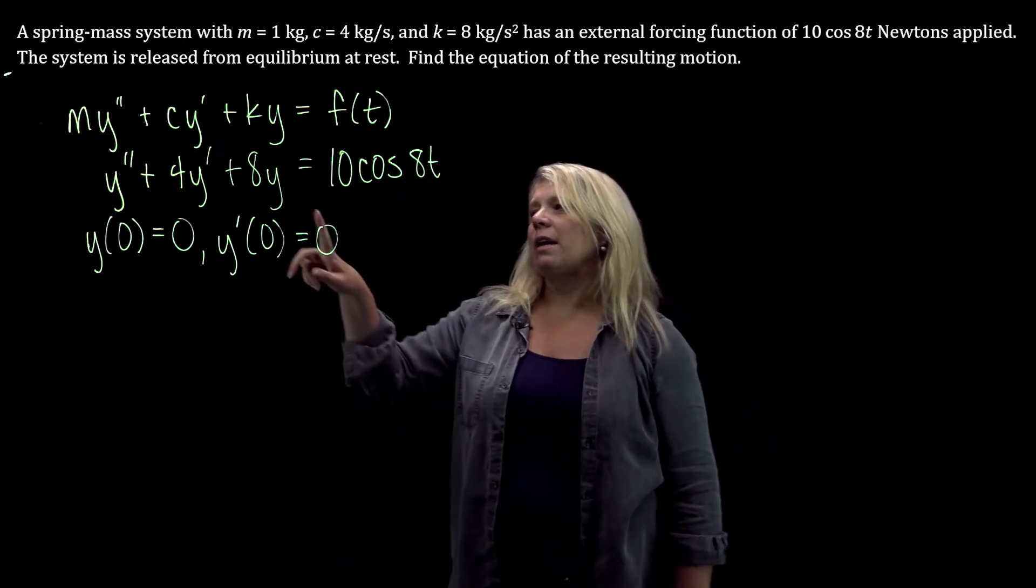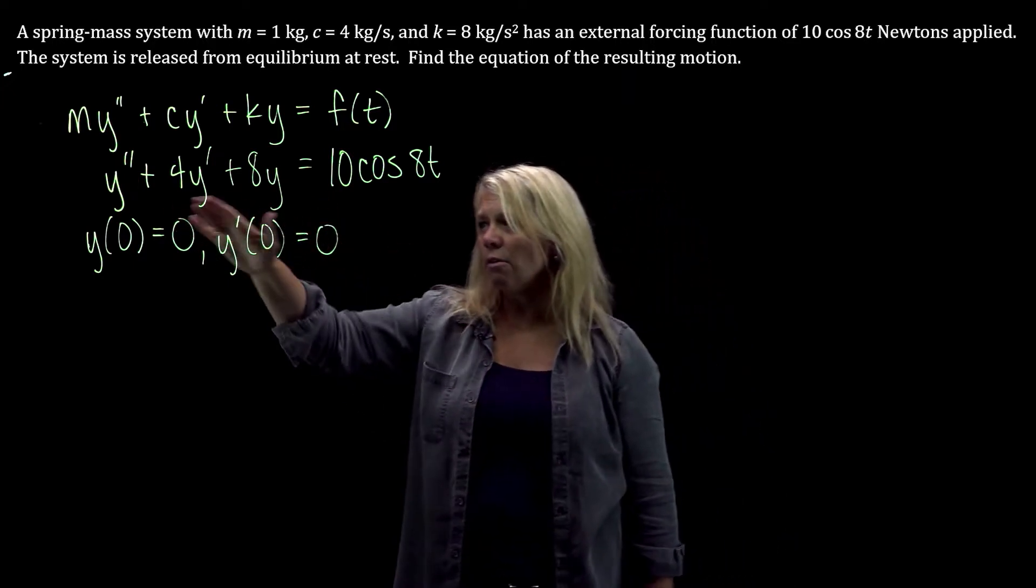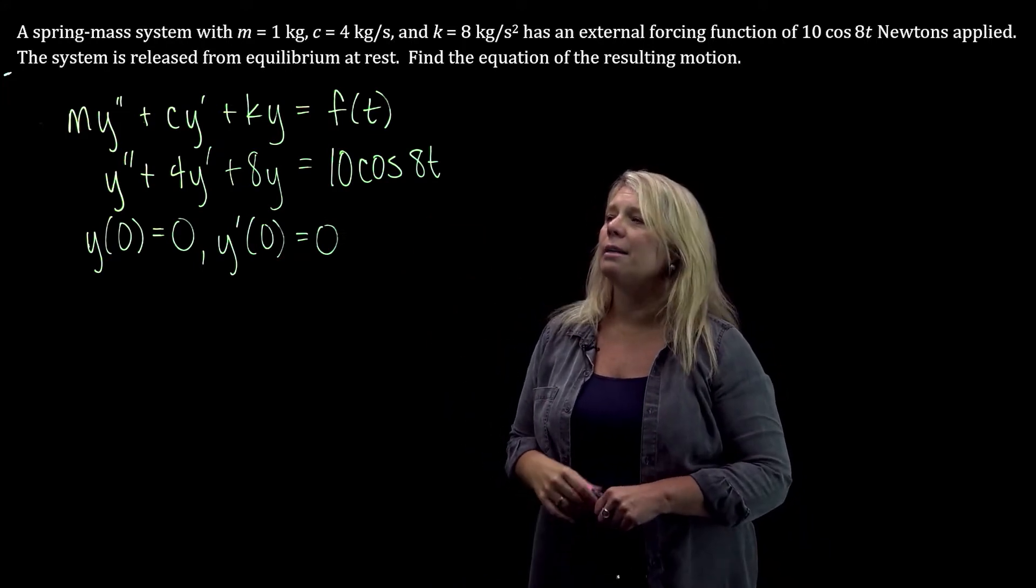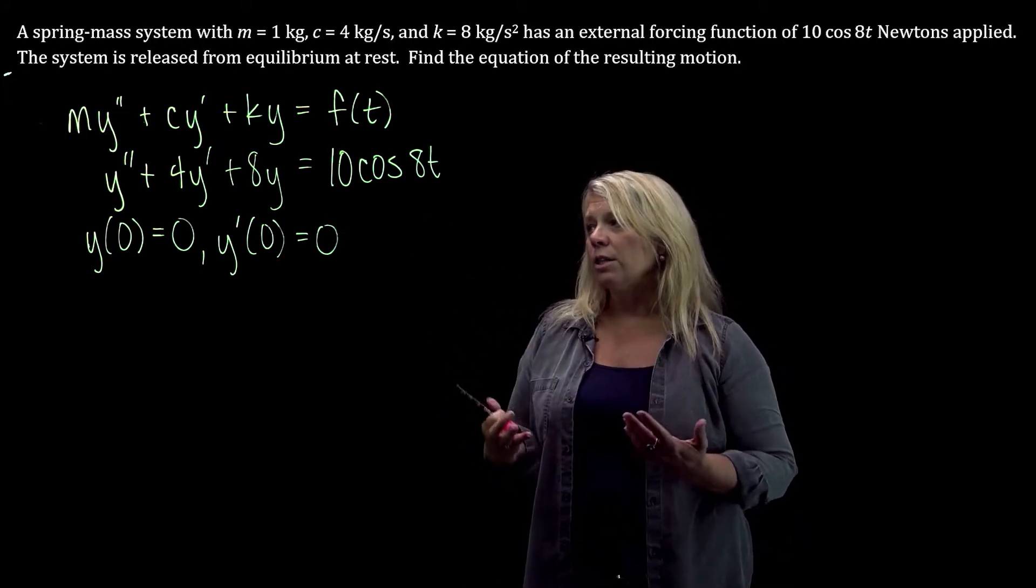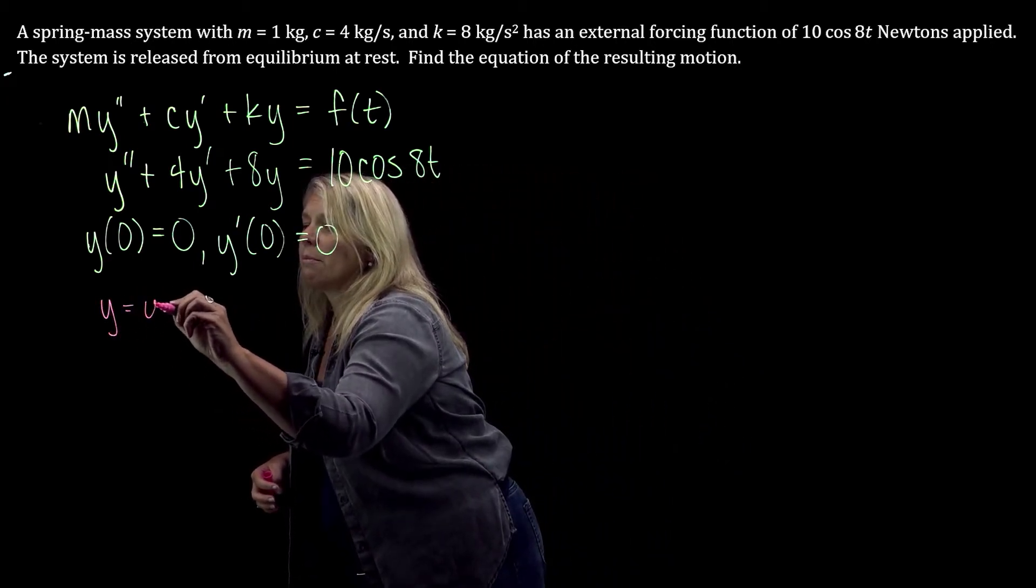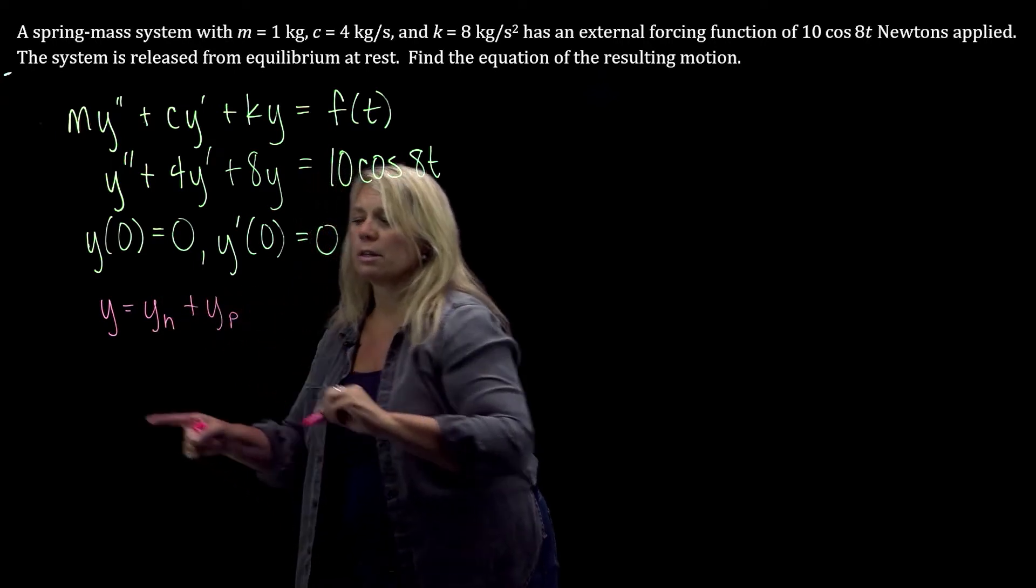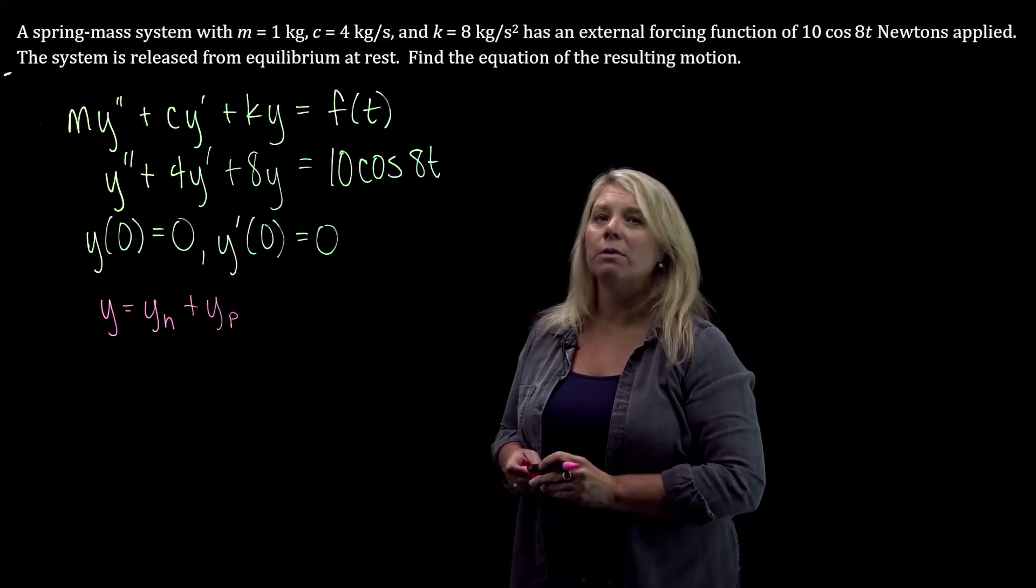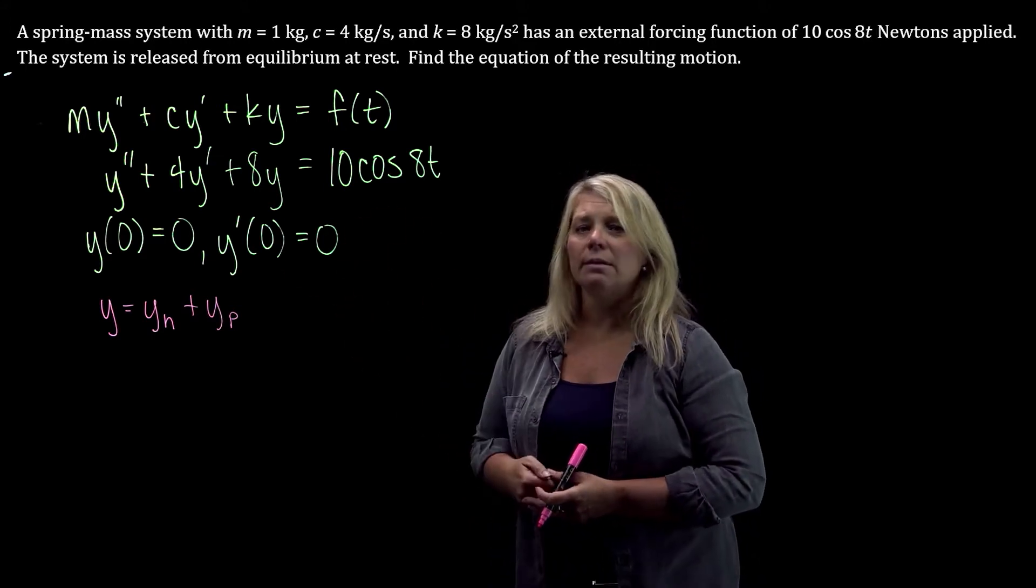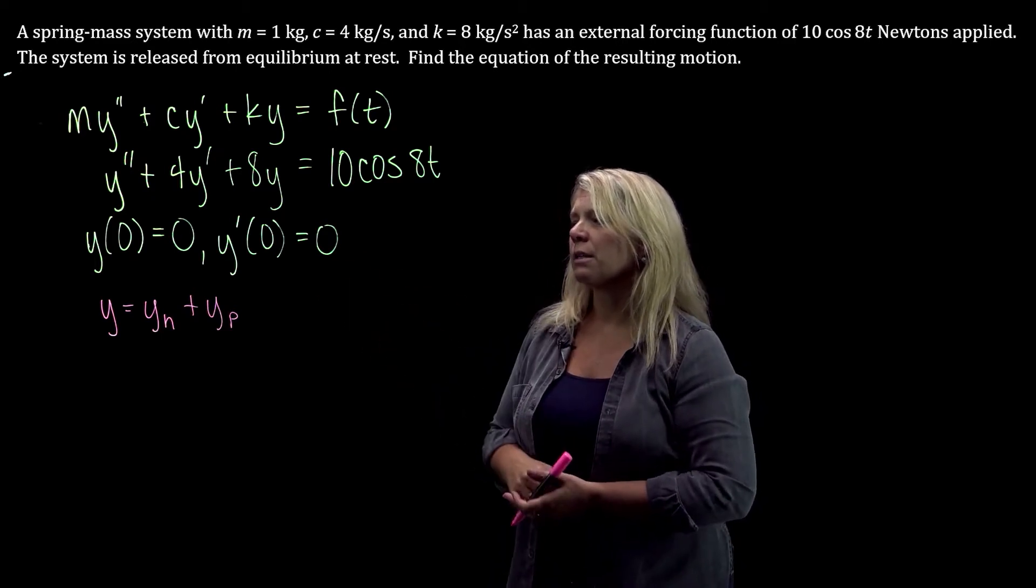We should notice that we have a second-order linear differential equation with constant coefficients and non-homogeneous since this right-hand side has a function that's not just the 0 function. So we're going to start by finding the homogeneous solution and then we'll find a particular solution and we'll add those together. This is the form of our general solution. Once we've done that, then we can plug in our initial values and find our c1 and c2.